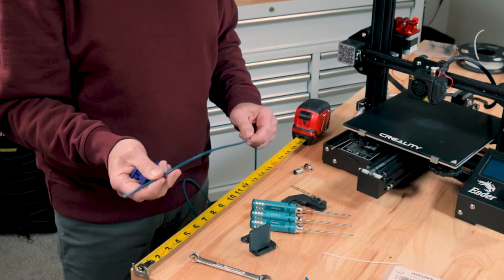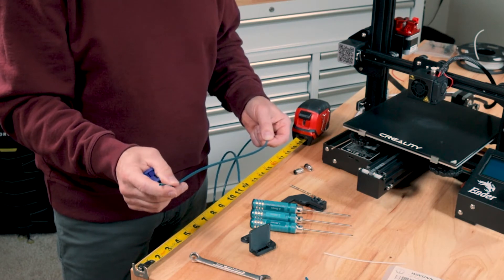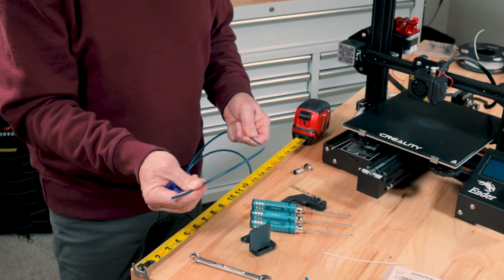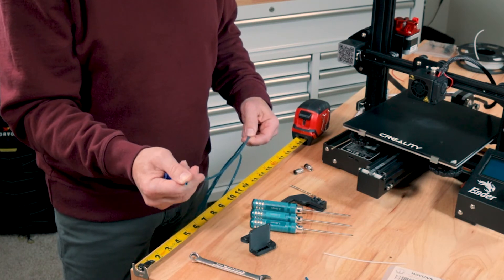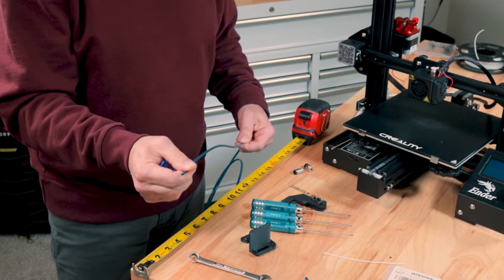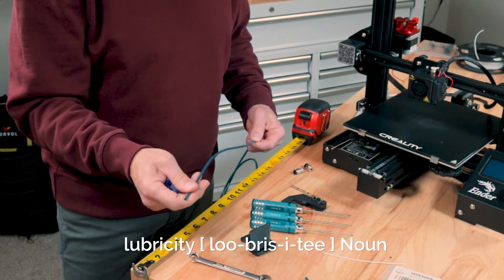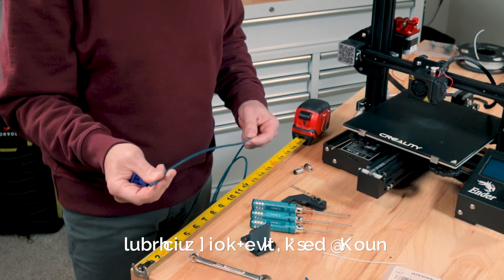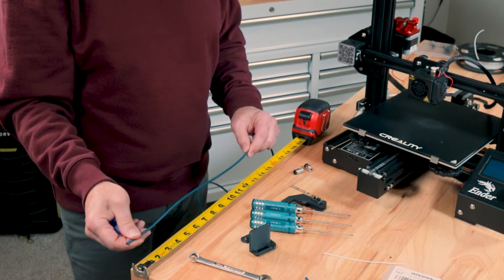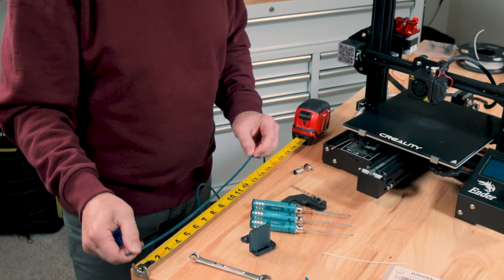Before we move on to the next step you're going to need to cut a piece of Capricorn Bowden tube. The reason you want to use the Capricorn tube, it's a much tighter tolerance on the inside than the factory tube and it has more lubricity. Yes, that's a real word to make the TPU slide through the tubing easier. I found the proper length in my opinion is 15 inches for this Bowden tube.